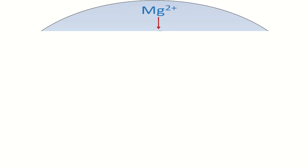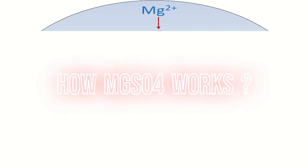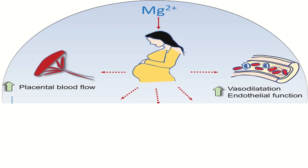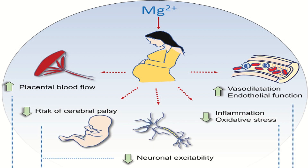Before explaining the role of calcium gluconate, it is important to know how magnesium sulfate works. Magnesium sulfate increases placental blood flow, increases vasodilation, and decreases inflammation and oxidative stress. All these effects result in decreased cerebral palsy and decreased neuronal excitability.